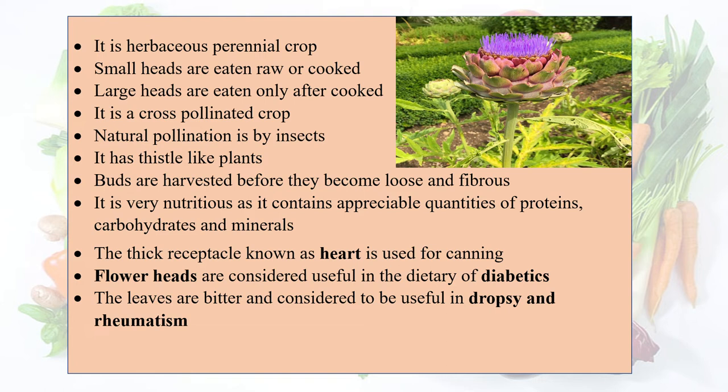Large heads are eaten only after cooking. It is a cross-pollinated crop; natural cross-pollination occurs by insects. It has distil-like pointed leaves. Buds are harvested before they become loose and fibrous, after which the market value is low.